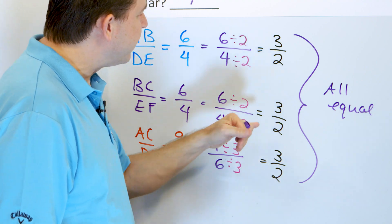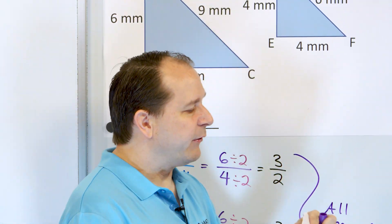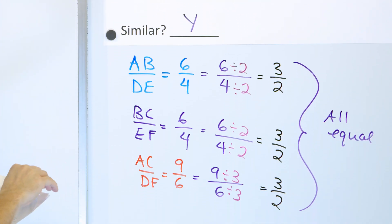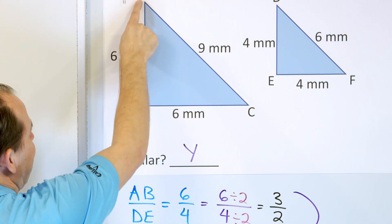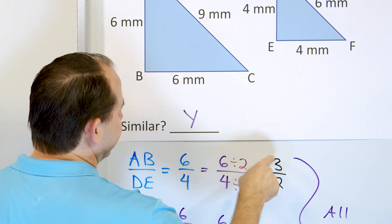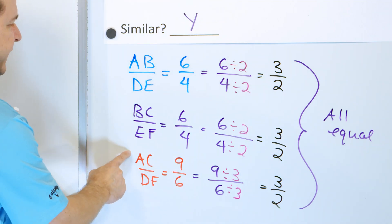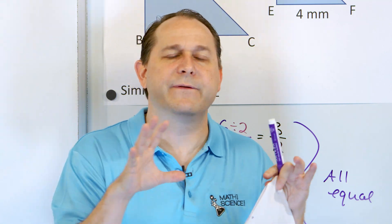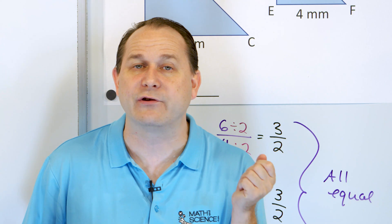If only one of these ratios were different — say it worked out to 3/4 — then the figures would not be similar. You can also visually tell that they look similar, but sometimes drawings can be deceiving. The way to confirm it is to take the ratio of the sides. What this is saying is that for every two units of DE, AB is three units — the same ratio holds for all corresponding sides.